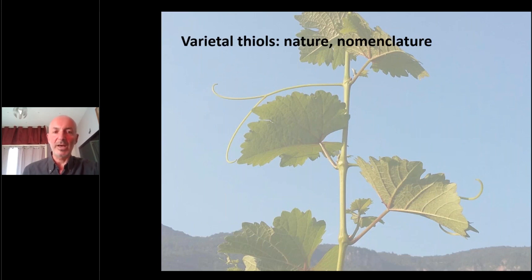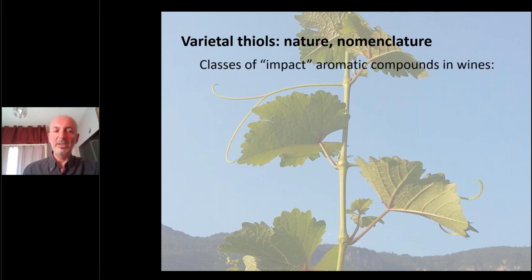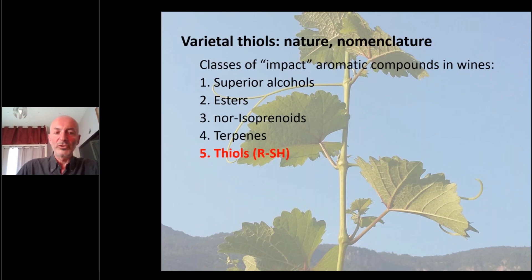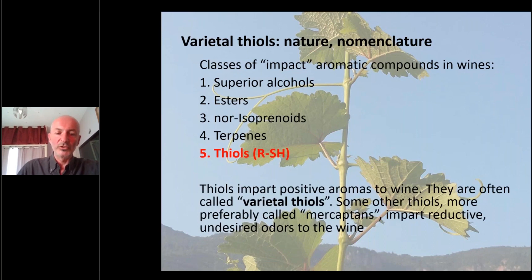The last family is the varietal thiols. I will present their nature and nomenclature, starting with the classes of impact aromatic compounds in wine. Superior alcohols, esters, norisoprenoids, terpenes, and also thiols have been identified as impact aromatic compounds. The thiols are also called varietal thiols. From a chemical standpoint, the chemical functional group is SH — sulfur, hydrogen.